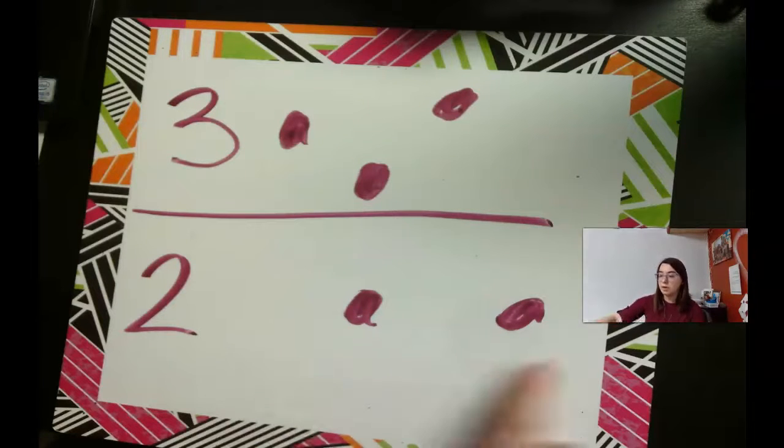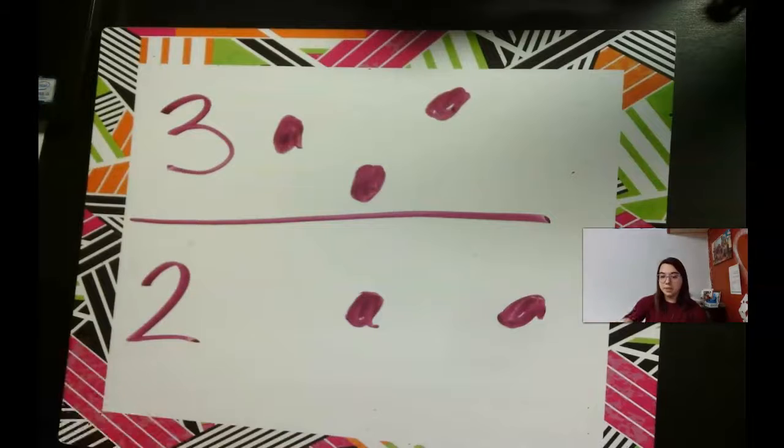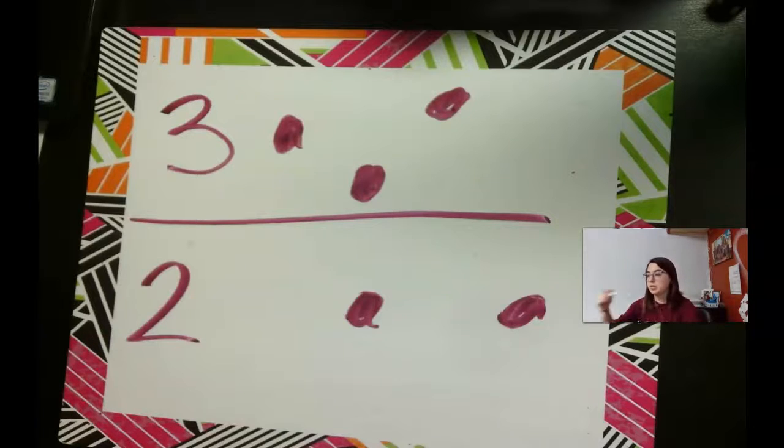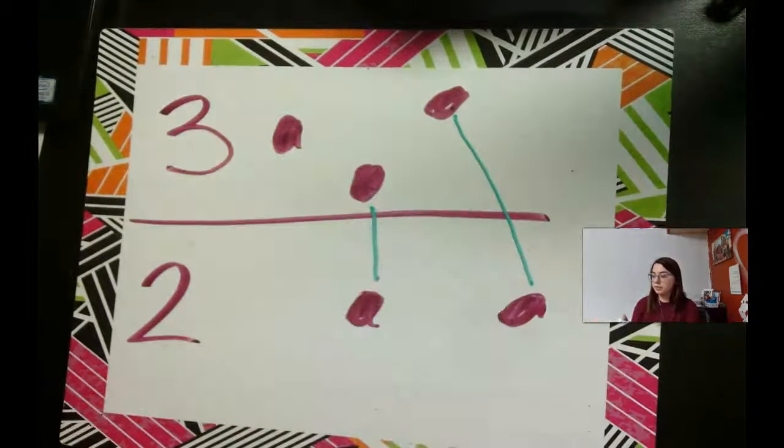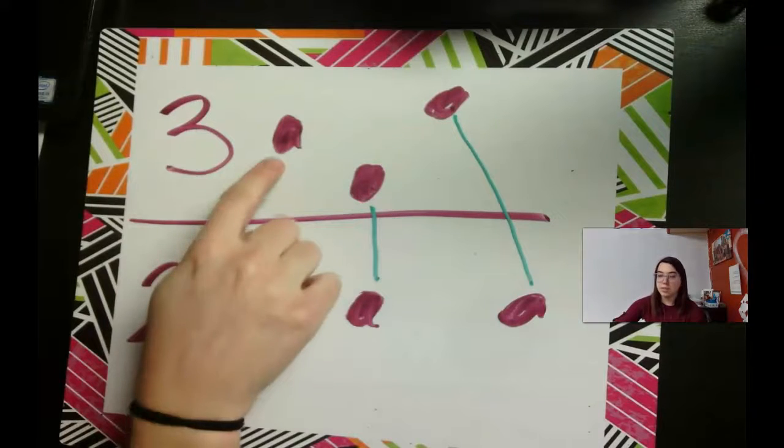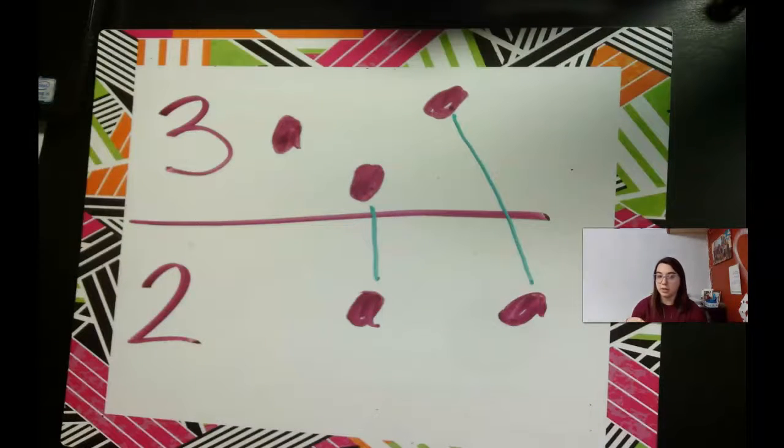It looks like two has more because it goes all the way out here. But if we make partners, we see that three actually has more because it has one left over without a partner.